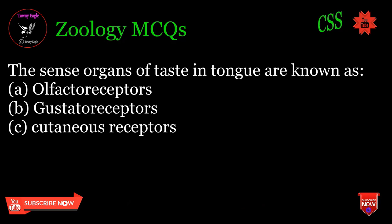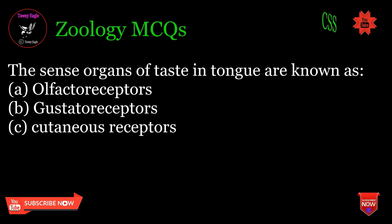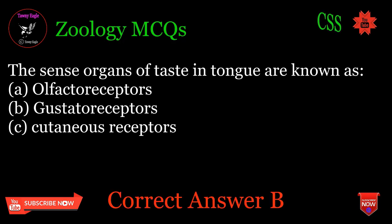The sense organs of taste in the tongue are known as: A. Olfactoreceptors, B. Gustatory receptors, C. Cutaneous receptors. Correct answer: B.